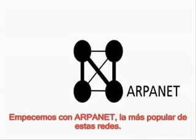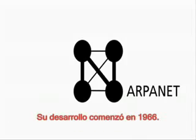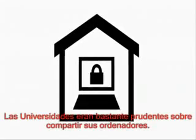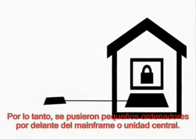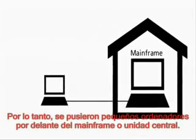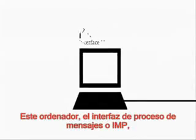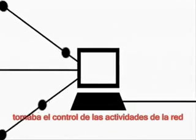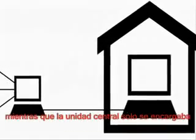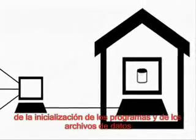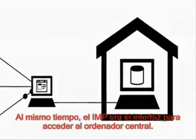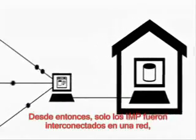Let's begin with the ARPANET, the most familiar of these networks. Its development began in 1966. Universities were generally quite cautious about sharing their computers, so small computers were put in front of the mainframe. This computer — the Interface Message Processor — took over control of the network activities, while the mainframe was only in charge of the re-initialization of programs and data files.